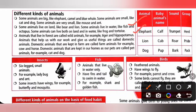Animals that live on land are called terrestrial animals. Animals that live in water are called aquatic animals. And animals that live on both land and water are called amphibians.